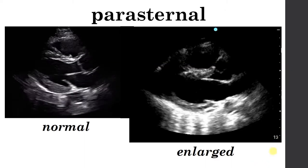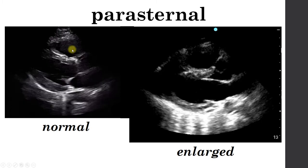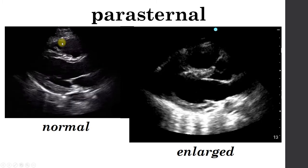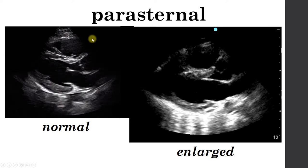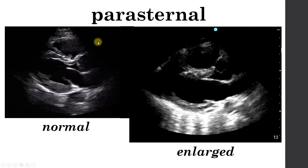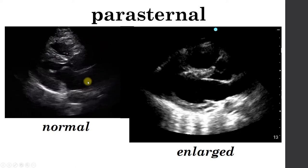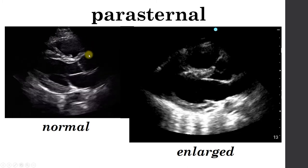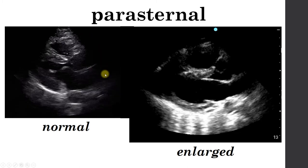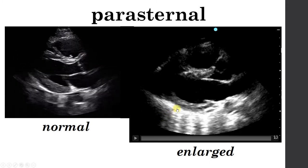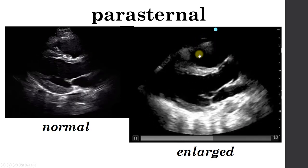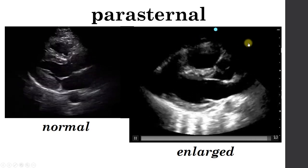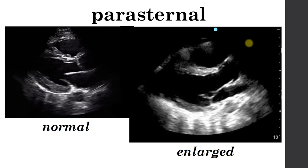Next, we'll talk about the right ventricle. On the normal parasternal long view, the right ventricle sits at the top of the screen and should be nice and triangular in shape. There's also a useful rule called the rule of threes: the right ventricle, the ascending aorta, and the left atrium should each be about one-third the size of the screen. As the RV begins to dilate, it starts to look much more circular in shape — almost like a pie. If you see RV dilation in the setting of hypotension, this could mean the patient has a massive pulmonary embolism.